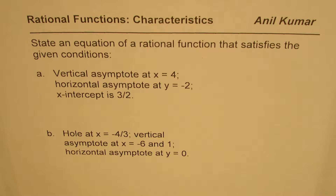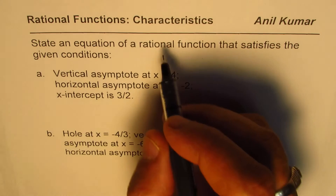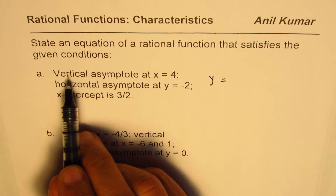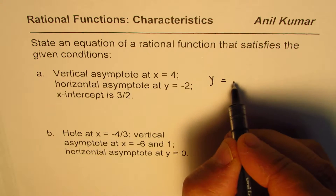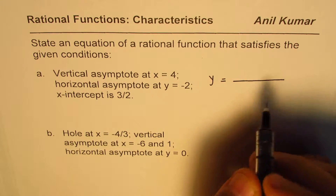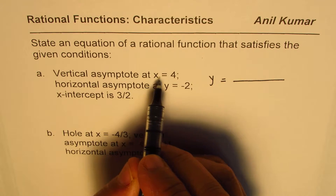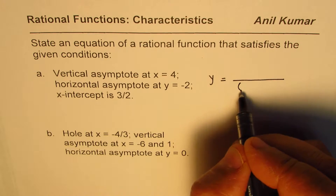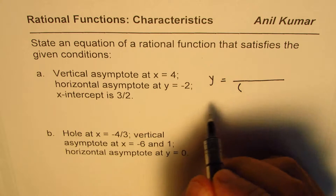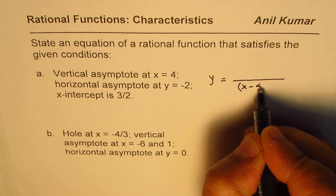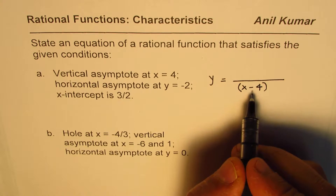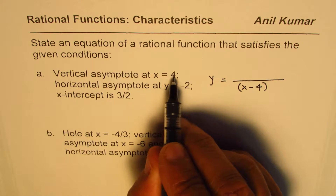Now let's see how to write these equations very easily. Let's begin by writing the function as y equals something. The vertical asymptote at x equals 4 will definitely be in the denominator. The denominator will be 0 at 4 if we write x minus 4, so that becomes a factor in the denominator and will ensure a vertical asymptote at x equals 4.